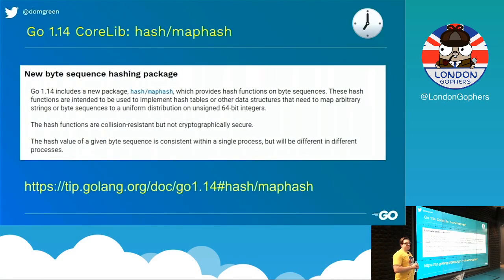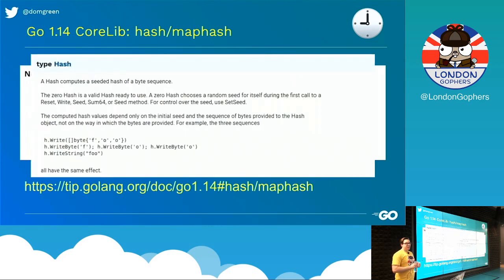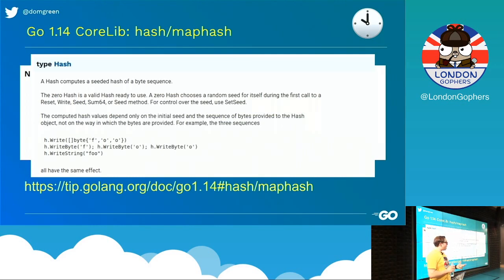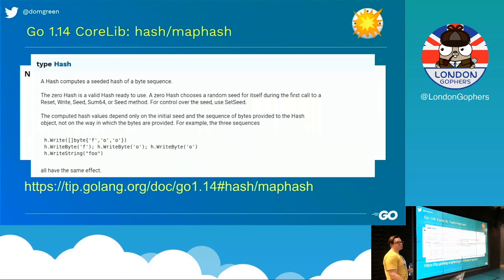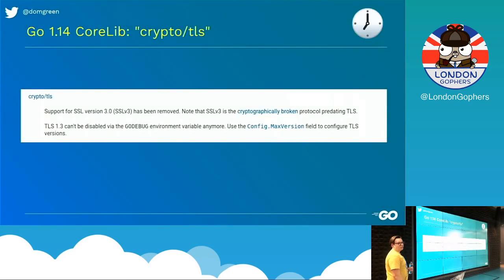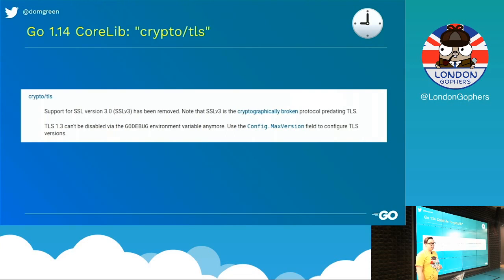The other thing being added to the library — we have a new package called hash/maphash. It basically takes a number of bytes and will return a hash of those bytes. You can seed the hash so that every time you spin up a new goroutine, you re-hash. TLS is also dropping support for SSL version 3, and TLS 1.2 will no longer be the default — TLS 1.3 is now default. Before in 1.13 you could turn it off with a GODEBUG environment variable, but you can't anymore.